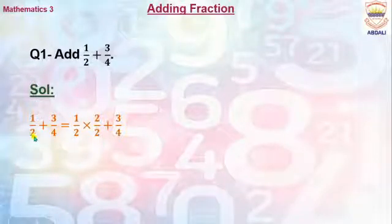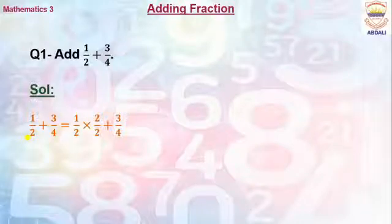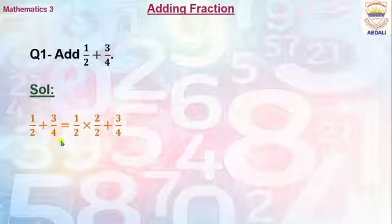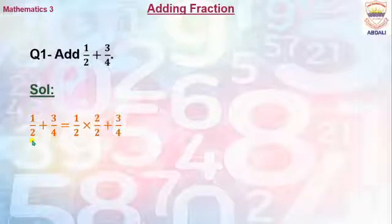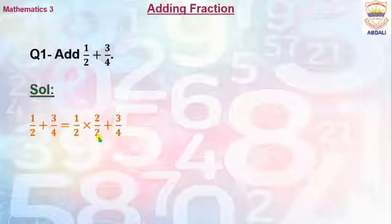Let's recall the table of 2. Can I find 4 in the table of 2? Yes. I can multiply 2 by 2 to get the denominator 4. So if I multiply 1/2 by 2/2, then I can get denominator 4 for this fraction. Let's do it: 1/2 multiplied by 2/2.